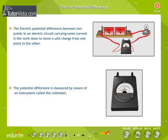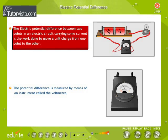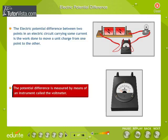Electric potential difference: The electric potential difference between two points in an electric circuit carrying some current is the work done to move a unit charge from one point to the other. The potential difference is measured by means of an instrument called the voltmeter.